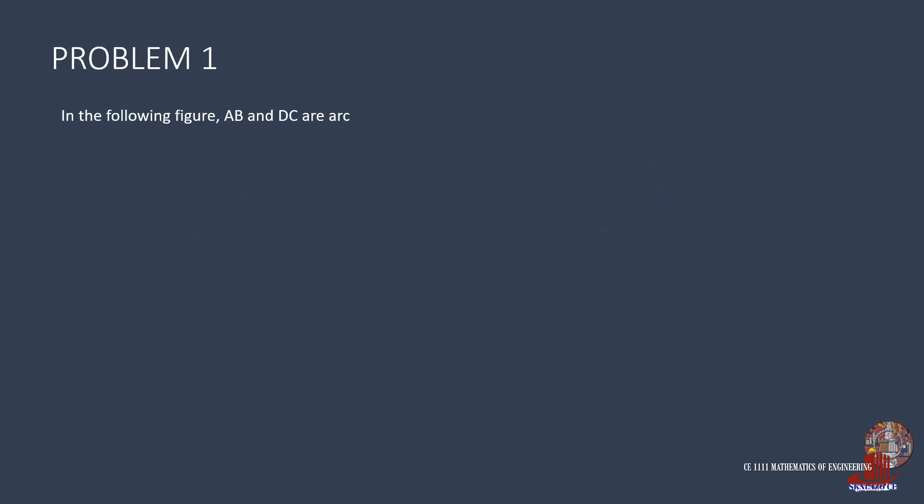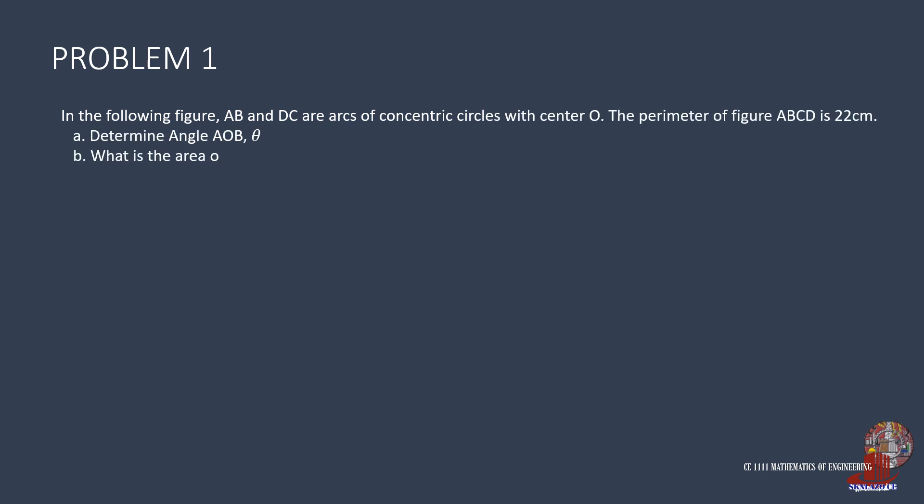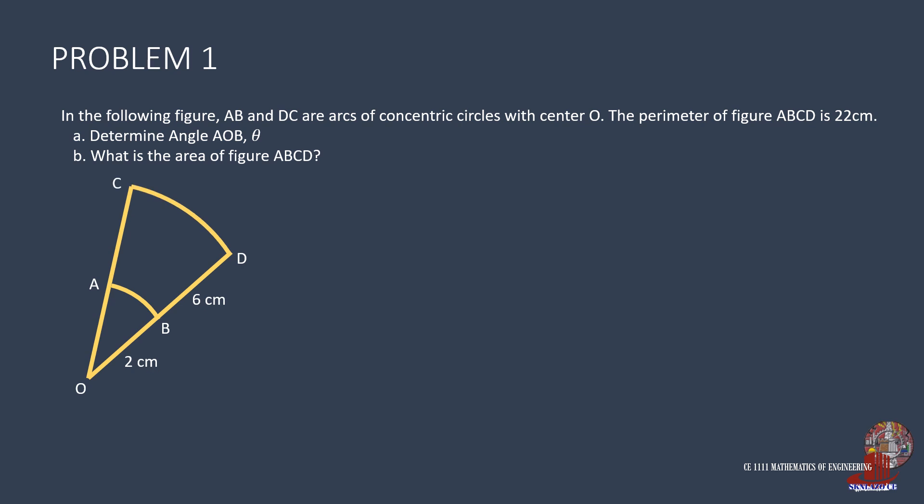For the first problem, given the figure, the problem states that the two arcs are concentric, which means their centers are the same point O. Also given is the perimeter of points ABCD, which is 22. We are to determine the central angle AOB, which is the same as COD, and then figure out the area bounded by points A, B, C, and D.